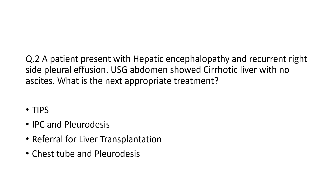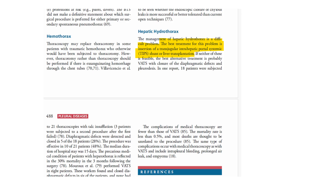The gold standard is referral for liver transplantation, but that needs time. So the next appropriate treatment in this question is TIPS. This is a screenshot from Light's book, which says that the management of hepatic hydrothorax is a difficult problem, and the best treatment is insertion of TIPS or liver transplantation. TIPS can act as bridging therapy. There is no indication for pleurodesis, IPCs, or ICD insertion in such a patient.